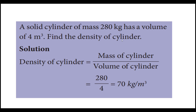Look at this simple problem. A solid cylinder of mass 280 kilogram has a volume of 4 meter cube. Find the density of the cylinder. Density is equal to mass per volume. Density of cylinder equals mass of cylinder divided by volume of cylinder. Mass here is 280 kilogram and volume is 4 meter cube. Substituting, you get 70 kilogram per meter cube. This is the density of the solid cylinder.